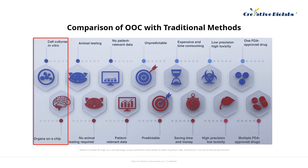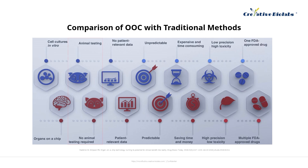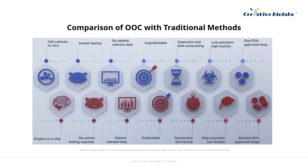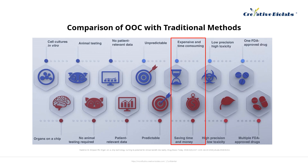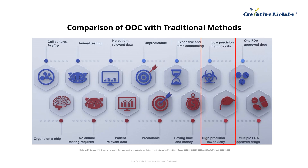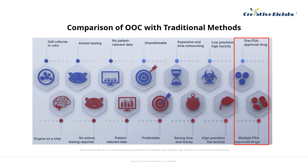Traditional methods necessitate in vitro cell culture, whereas OOC does not. Traditional methods rely on animal testing, unlike OOC. Traditional methods lack patient-related data, but OOC incorporates such data. Traditional methods lack predictability, but OOC offers predictability. Traditional methods are expensive and time-consuming, while OOC significantly saves time and investment. Traditional methods exhibit low accuracy and high toxicity, while OOC presents the opposite traits. Lastly, the number of FDA-approved drugs is considerably lower in the traditional approach compared to OOC.